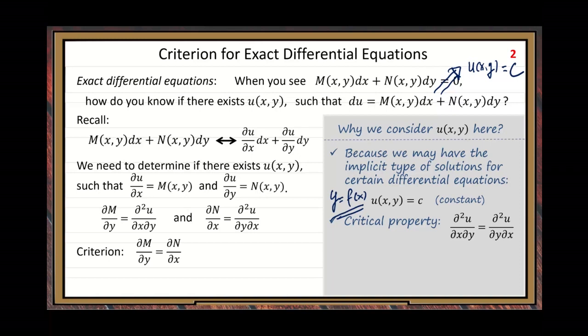I will show you a few examples. The criterion for the equality — you need to have some condition. Not for arbitrary U. The condition, actually, is a simple one: the second partial derivatives are continuous. If the second partial derivative is continuous, then we have this identity. It is a little stronger than what we need, but because this condition is very simple, we just take the simple version.